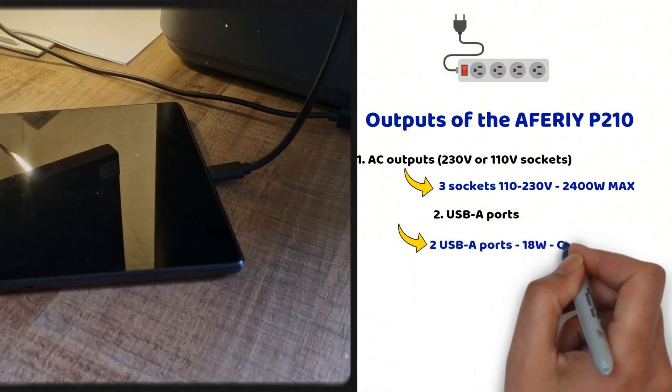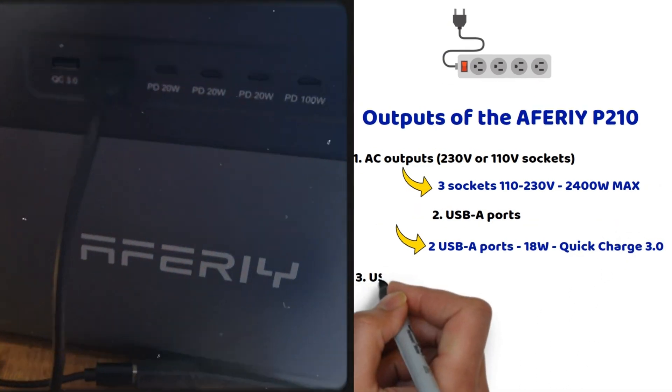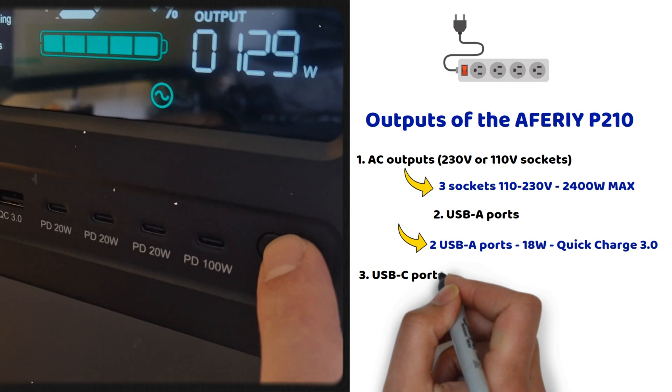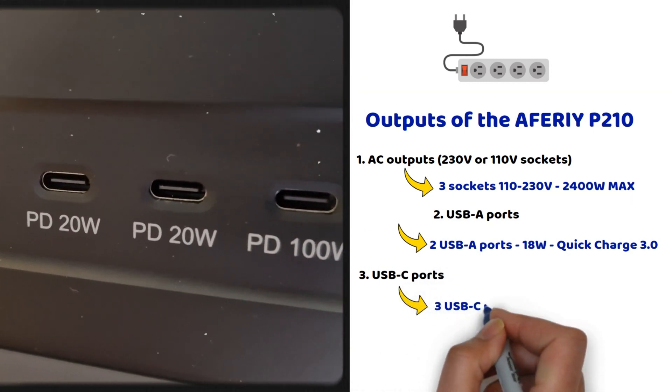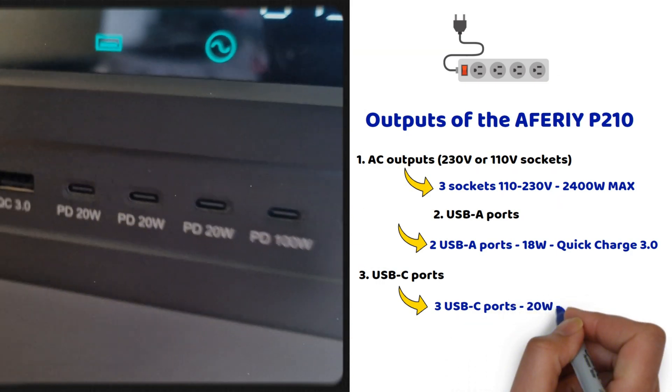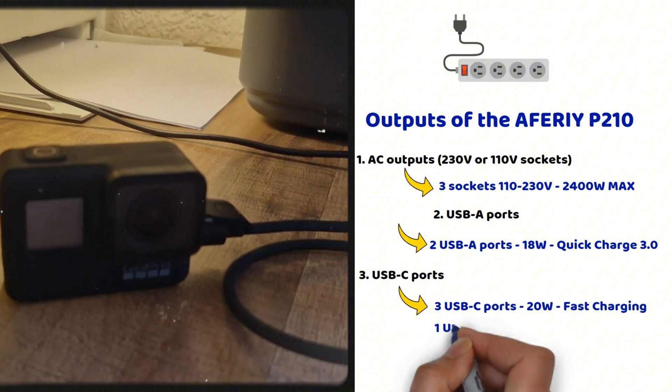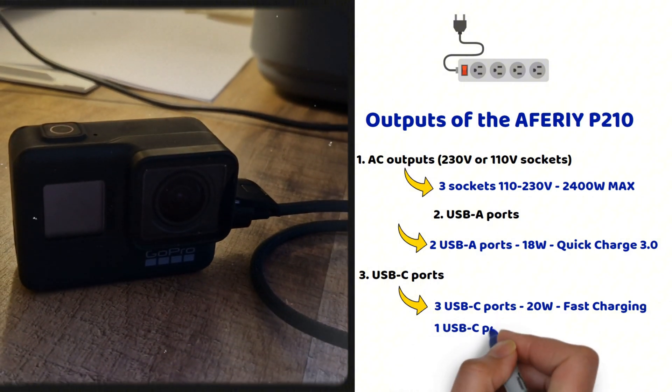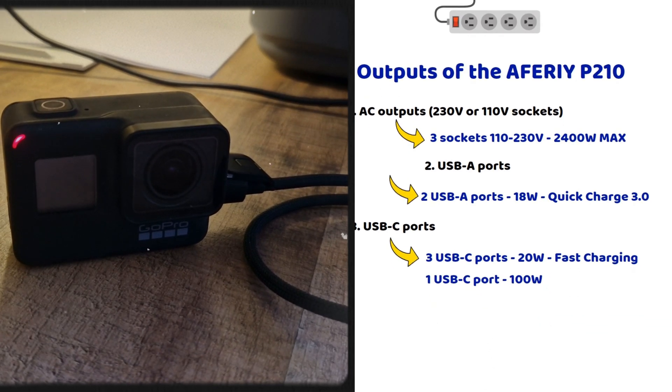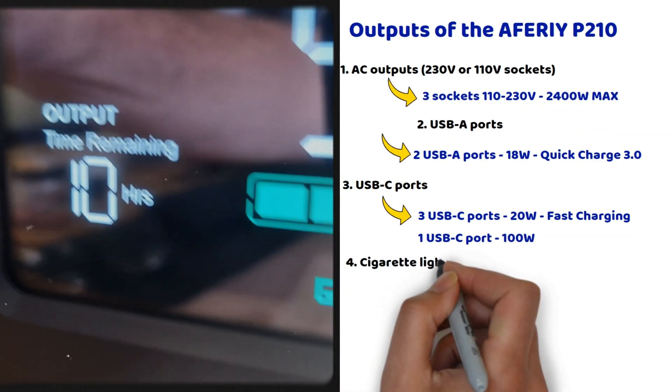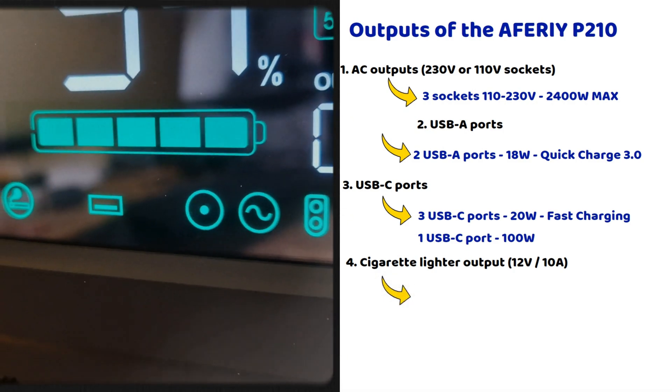There are two USB-A ports compatible with quick charge 3.0 technology, offering 18 watts of power, perfect for charging smartphones, tablets, or other small devices requiring fast charging. On the USB-C side, the station is very well equipped. Three USB-C ports provide up to 20 watts of fast charging, again for smartphones, tablets, and similar devices. One USB-C port offers 100 watts power delivery for charging more powerful devices like laptops, MacBooks, or drones, enabling rapid recharging. This feature is particularly valuable.